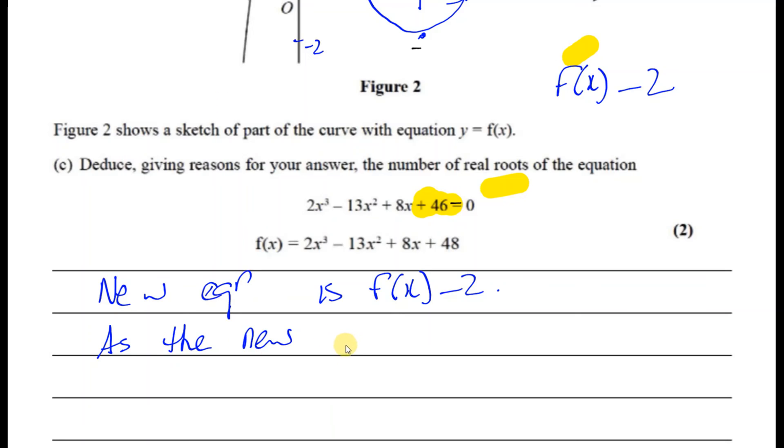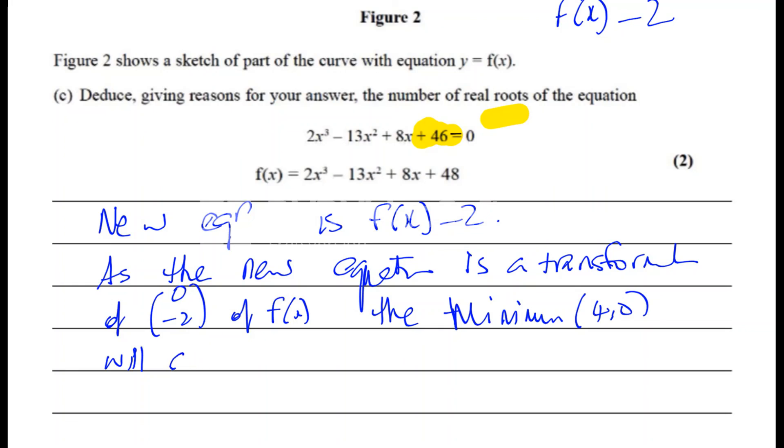So as the new equation is a transformation of f(x) - 2, the minimum point, which is (4, 0), will drop two places. Therefore, the curve will cut the x-axis in three distinct places. Therefore, three real roots.